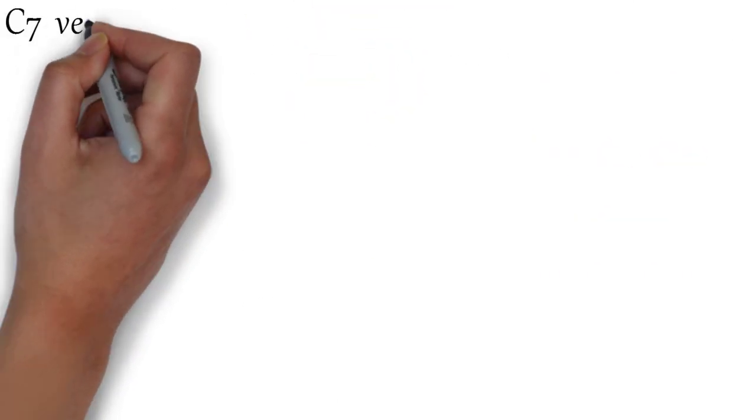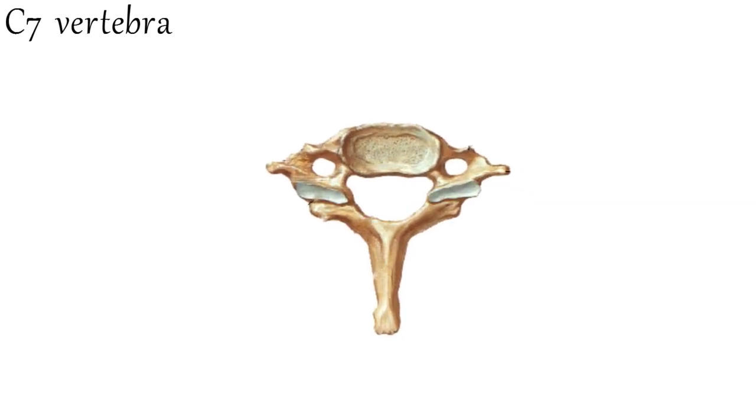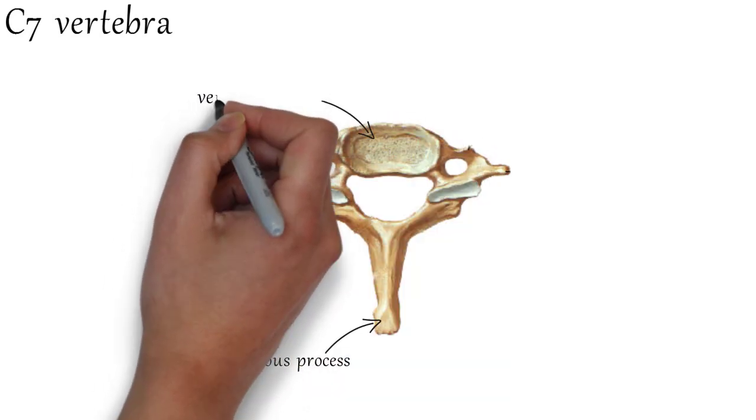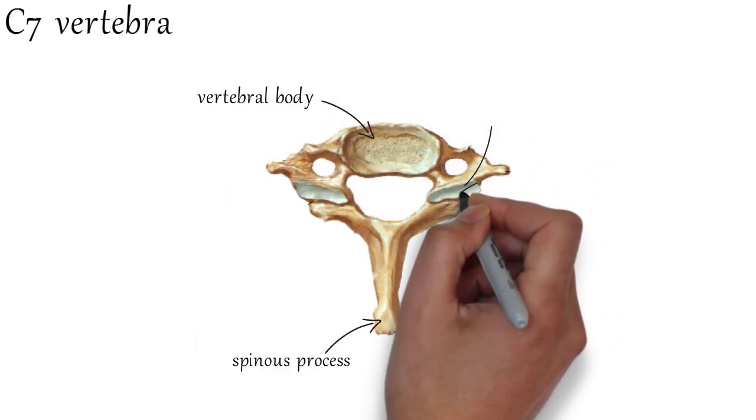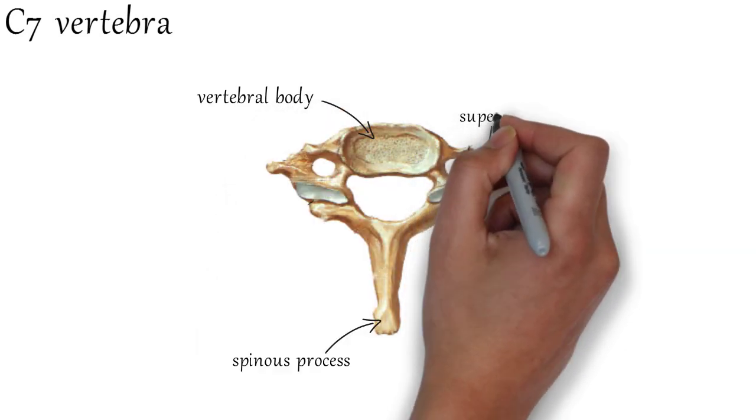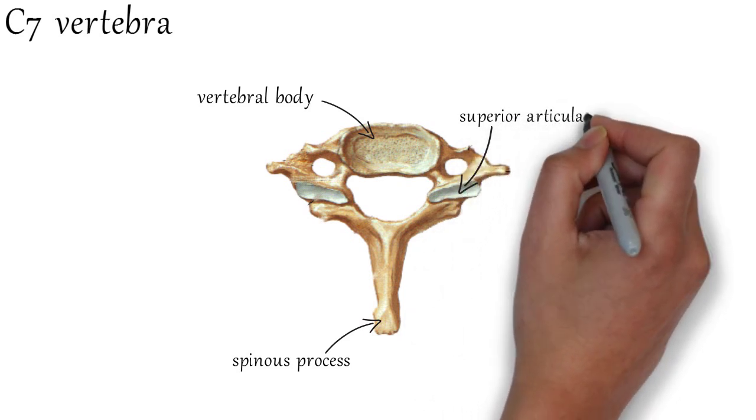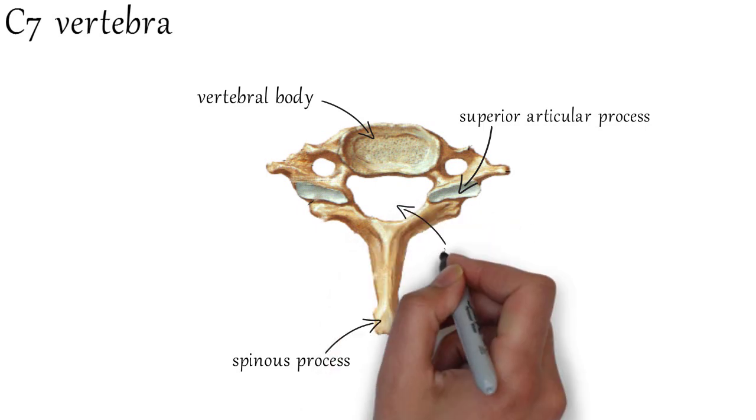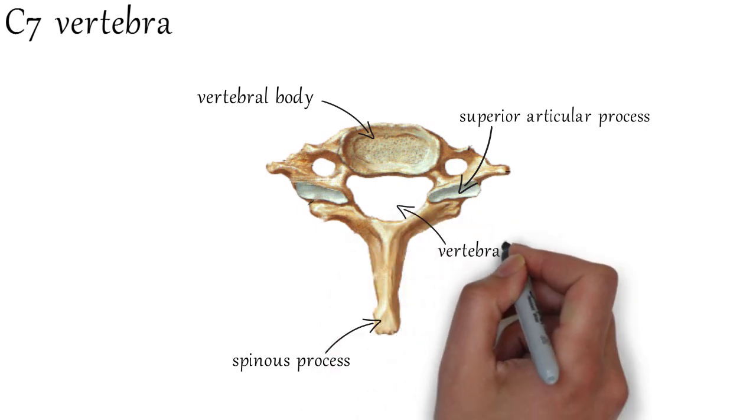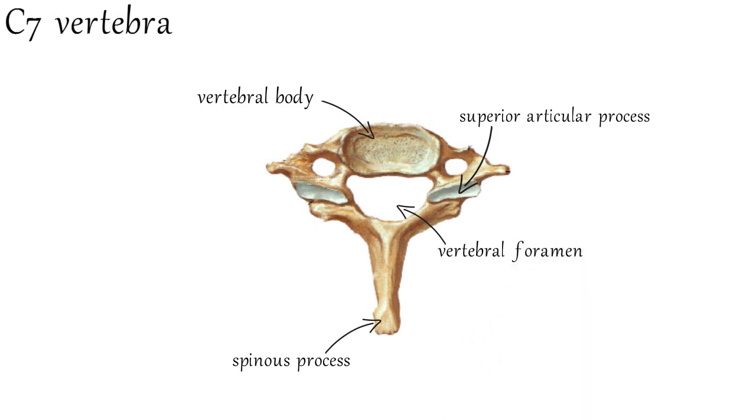Last but not least, the seventh cervical vertebra, which has a long spinous process. This is the vertebral body. This is the superior articular process. This is the vertebral foramen and the lamina.